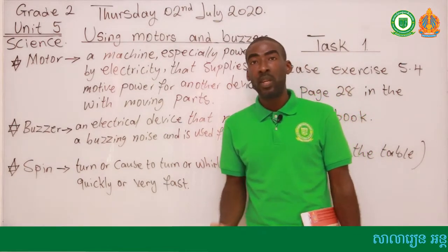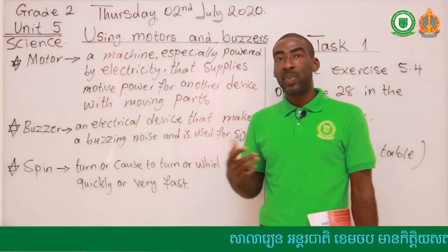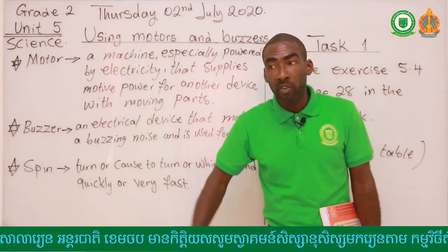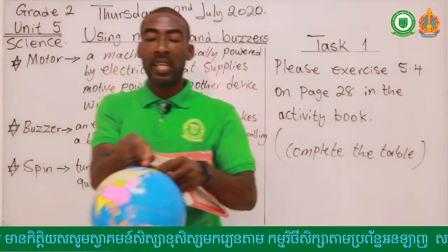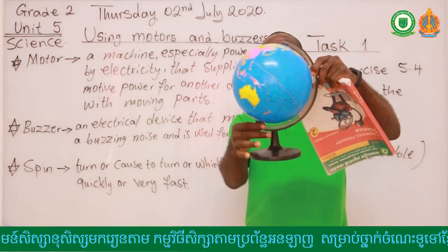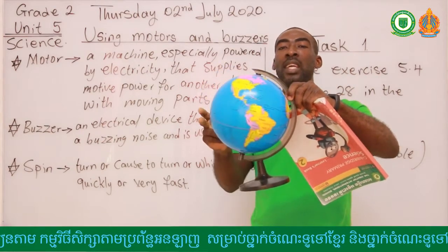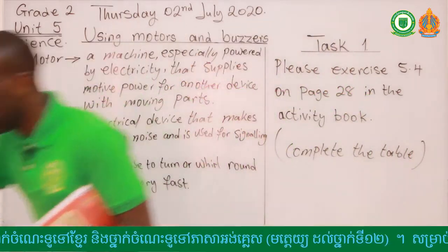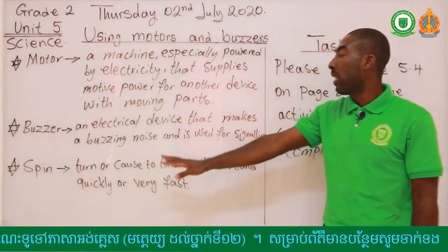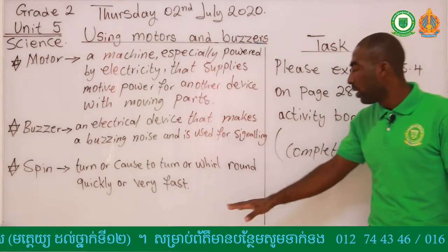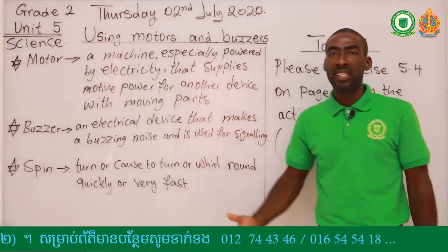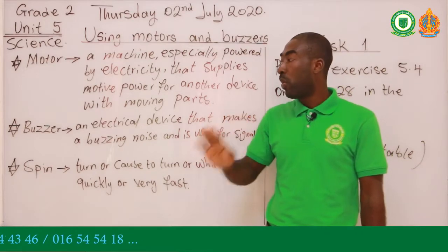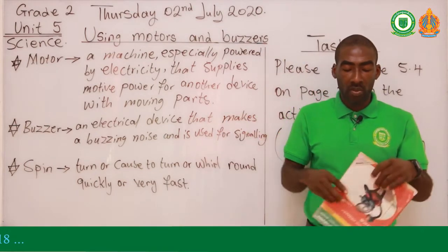The last word that you need to understand is spin. What is spin? Whenever you are spinning something, it means that particular thing is rotating — it is going round. If it is going round it means that it starts from one point, goes and makes a form of a circle. Let's use our globe as an example — it stands here and we spin it like this. Once it is going round like this, it means that you are spinning. Spin means something that turns or causes to turn round quickly or very fast.